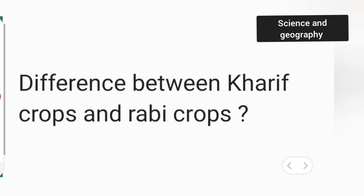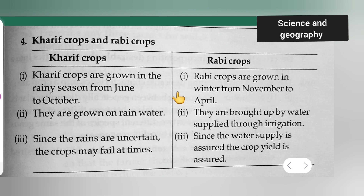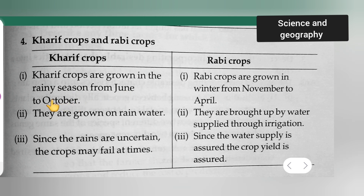In today's video, I'm going to give you the difference between Kharif crops and Rabi crops. Kharif crops are grown in the rainy season from June to October.